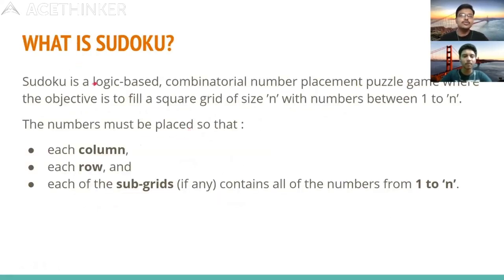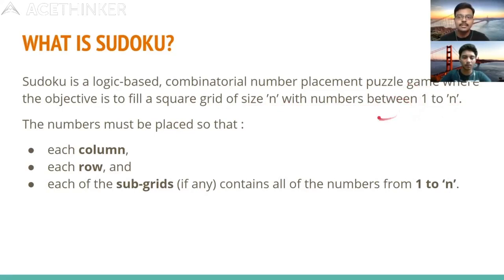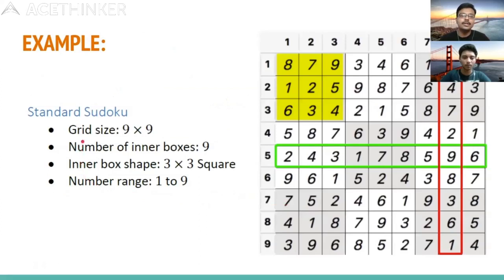Now, what is Sudoku? Sudoku is basically a logic-based combinatorial number placement puzzle game where the objective is to fill a square grid of size n with numbers from 1 to n. For example, the common 9×9 Sudoku requires each row, each column, and each subgrid to be filled with numbers 1 to n, where each contains all numbers without repetition.